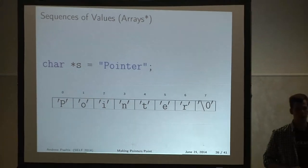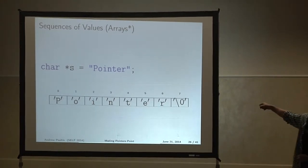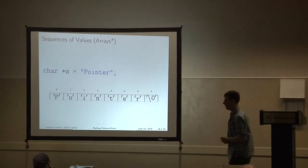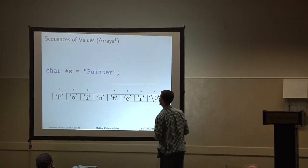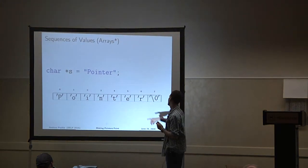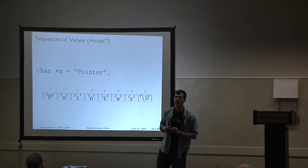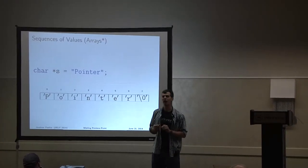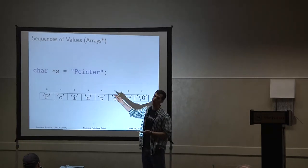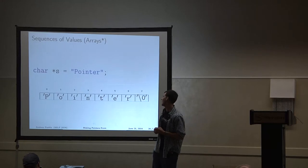The null terminator is the way that C knows this character string is done. Without it, there is no bounds checking in C unless you explicitly add it, so you would not be able to know where this string ends unless you had an associated length with it. There's a function called strlen which gets the length of the string. It goes and starts here, goes all the way until it finds the null terminator and says your string is length seven — going from index zero to six.